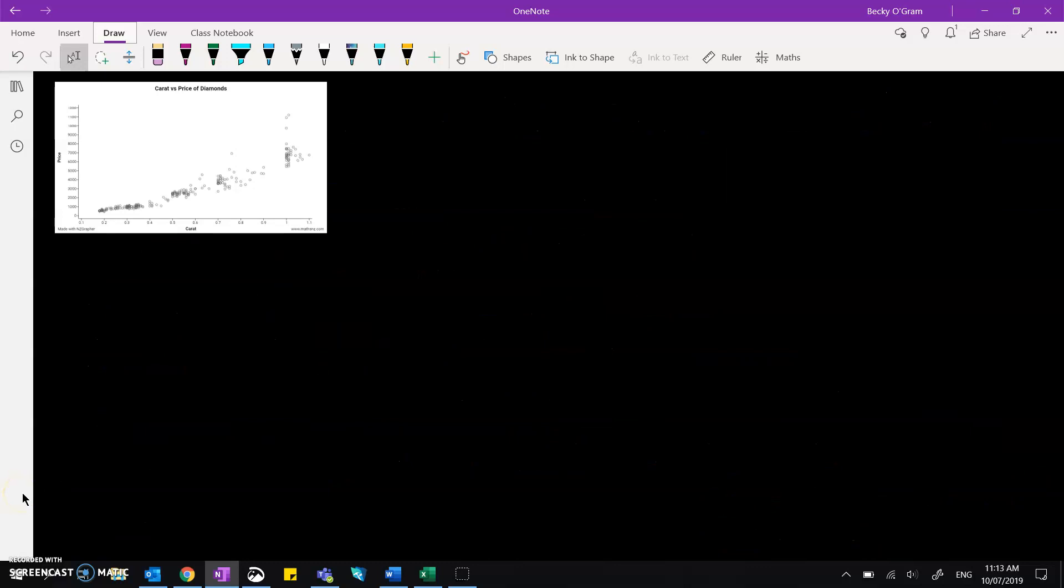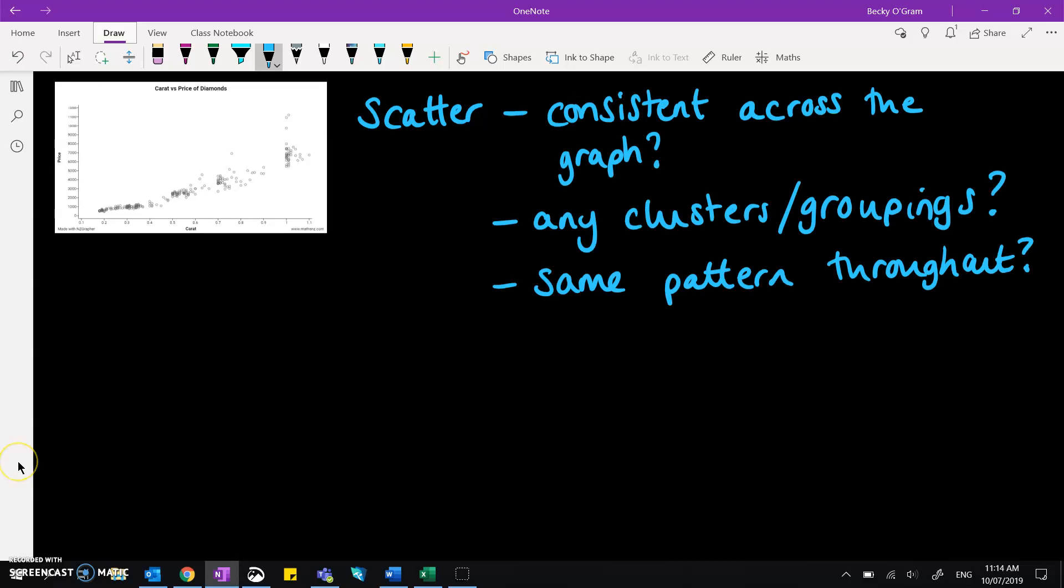And there are a few other basics that you should consider under your initial analysis, and that is looking at the scatter. And for that, you ask yourself these questions, looking for whether it's consistent across the graph. Are there any clusters or groupings that you can see? Is it the same pattern throughout or does it change? So we can see on this one in particular, it's got a similar pattern for the first part of the graph, but then it fans out and we've got more variation the higher the carat size goes. And you talk about each of those things.